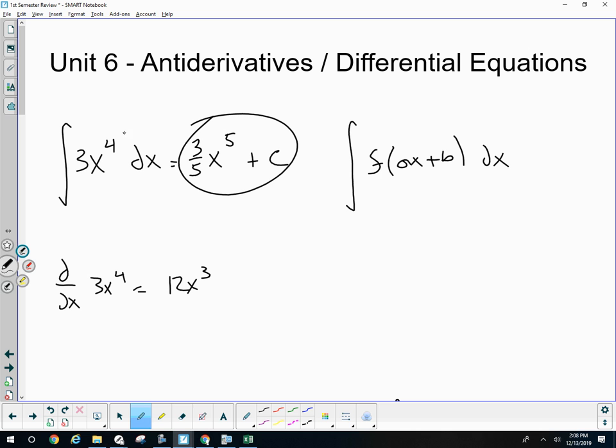So if I took the derivative of this, no matter what c is, I get this. So we always include a plus c when we're going backwards. No plus c is needed when we're taking the derivative.